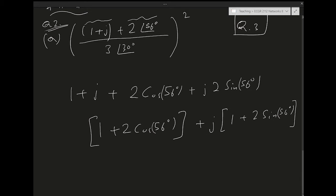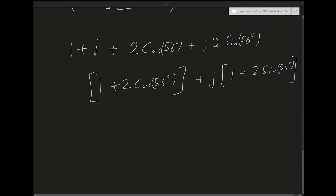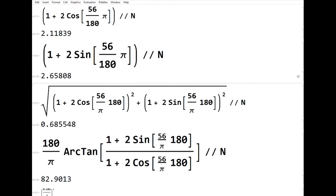Using Mathematica as a calculator, I evaluate 1 + 2cos(56°) and 1 + 2sin(56°). Notice I'm dividing the 56 by 180 and multiplying by pi to convert degrees to radians. Doing those two calculations, I get approximately 2.12 and 2.65.